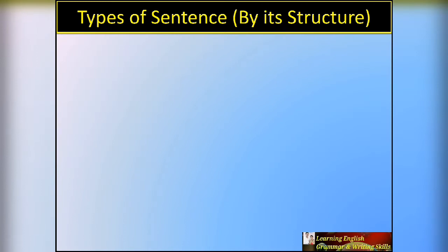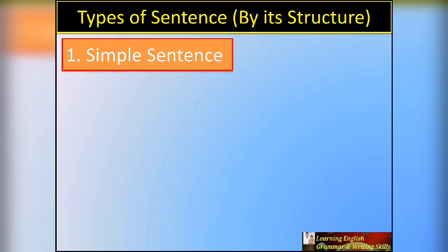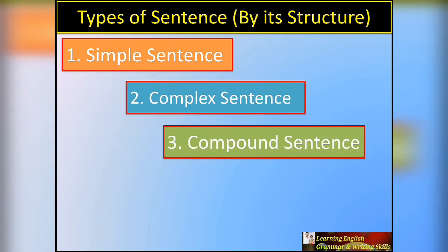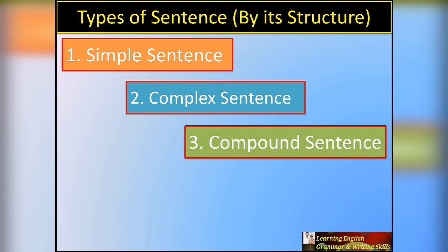Now we need the types of sentences here — but these are not the same types we studied before, like interrogative sentences. Here, types of sentences have a different structure. The first is simple sentence, the second is complex sentence, and the third is compound sentence. In Hindi: Saral Wakya, Sanyukta Wakya (complex), and Sanyukta Wakya (compound) — grammar can help identify them.